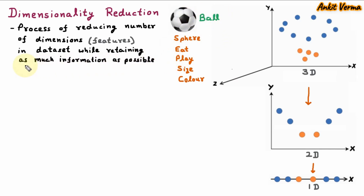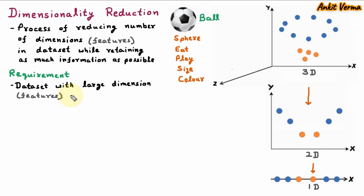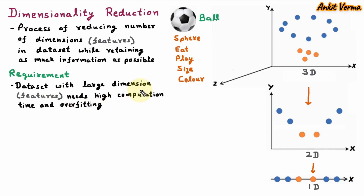Dimensionality reduction is required because a dataset with a large number of dimensions or features needs high computation time and they are prone to overfitting. Overfitting means we are taking so many features that are reducing the model's performance.